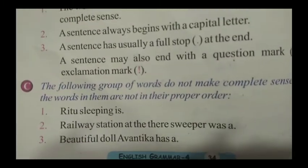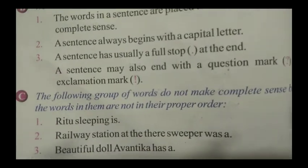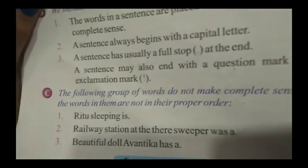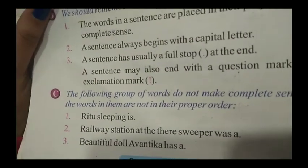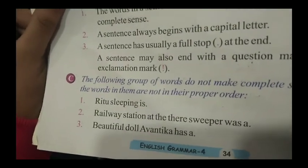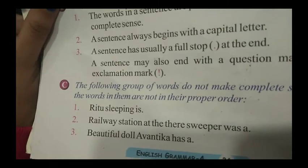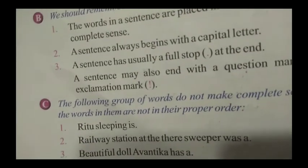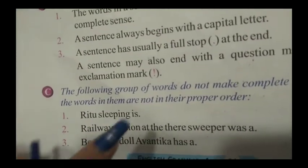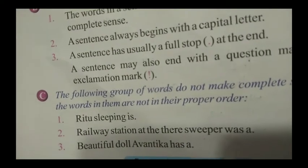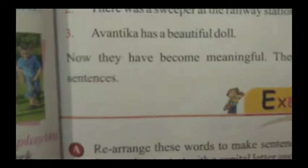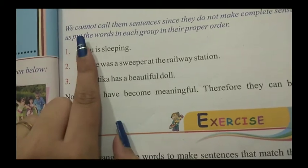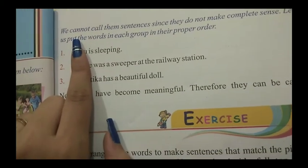The following groups of words do not make complete sense because the words in them are not in their proper order. When the words are not placed properly, it doesn't mean anything. For example: 'Ritu sleeping is', 'railway station at their sweeper was', 'a beautiful doll Avantika has' — we cannot call them sentences because they do not make complete sense.